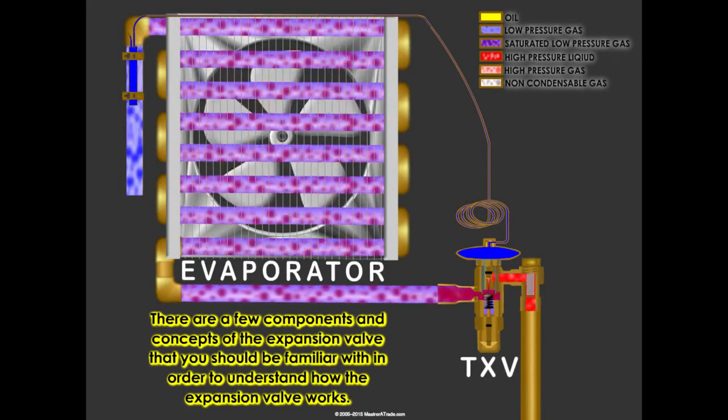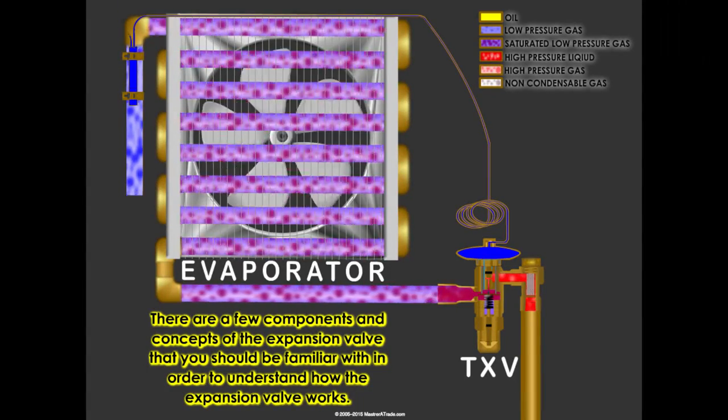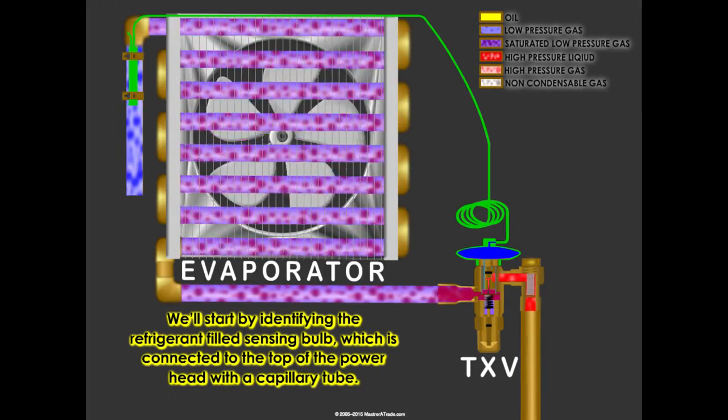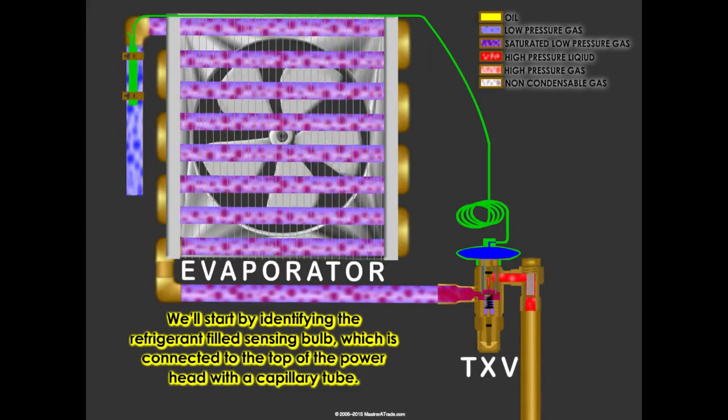There are a few components and concepts of the expansion valve that you should be familiar with in order to understand how the expansion valve works. We'll start by identifying the refrigerant-filled sensing bulb, which is connected to the top of the power head with a capillary tube.